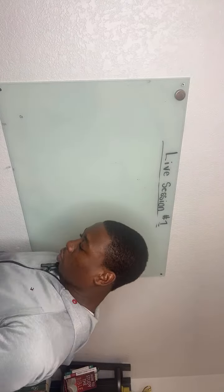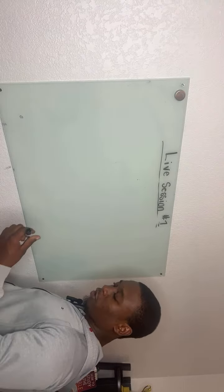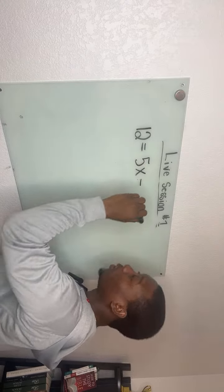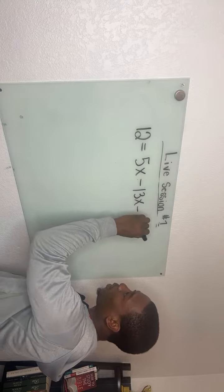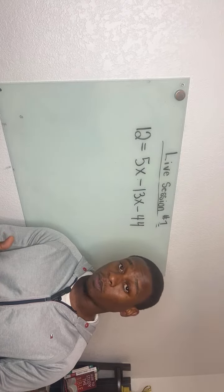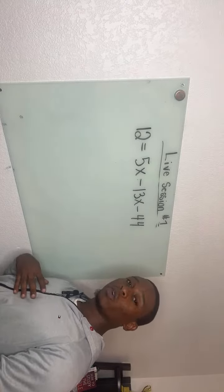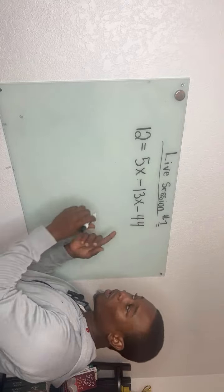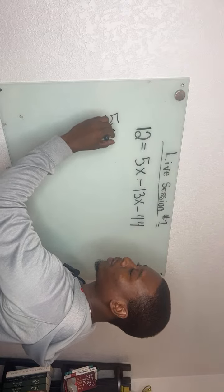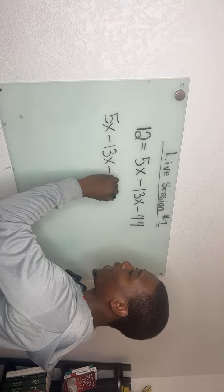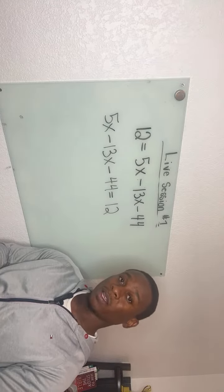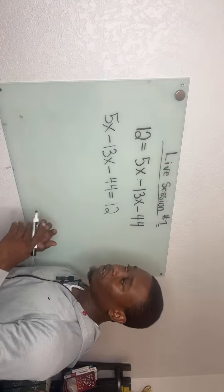Our first equation says 12 is equal to 5x minus 13x minus 44. A very special tip: always put yourself in the best position to answer the problem. I like my x on the left side of the equal sign, so I'm going to flip the equation over. You don't have to do this if you're comfortable with it as-is. First step: do we need to distribute? There are no parentheses, so we do not. Next: are there any like terms to add on the same side?